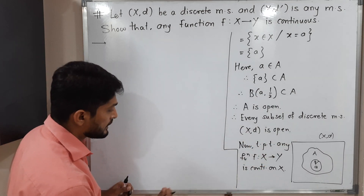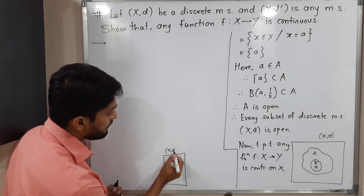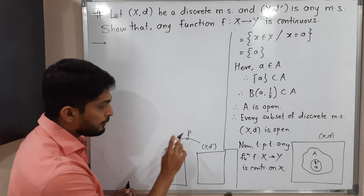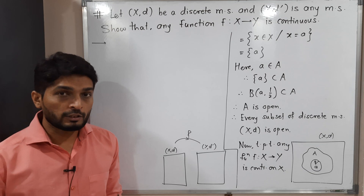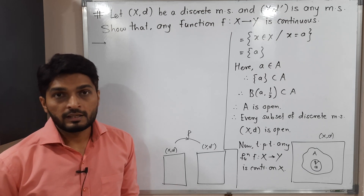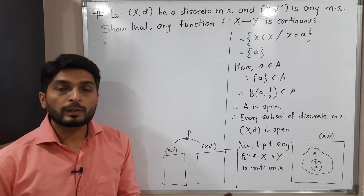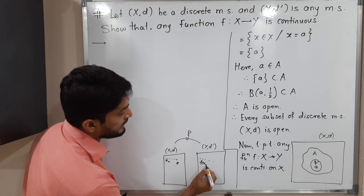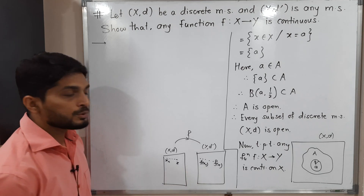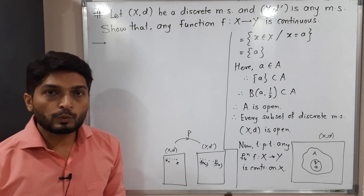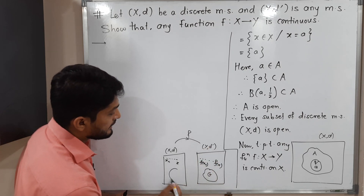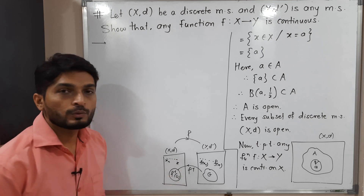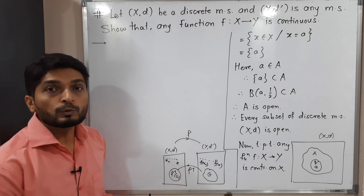There is one more way: for any open set G in Y, its inverse image f⁻¹(G) is also open in X. If we can prove this, then we can declare f is continuous. I am going to use this approach. We have metric space X,d which is discrete, and Y,d' is any metric space, with function f from X to Y. We want any open subset G of Y, so let G ⊆ Y be an open set.